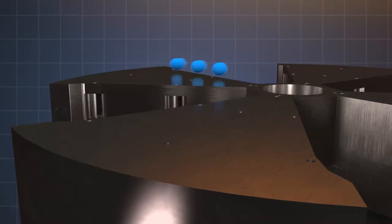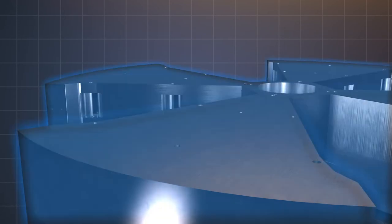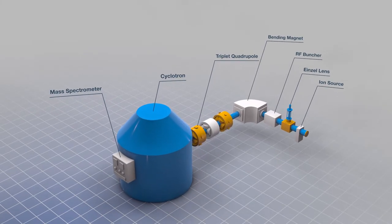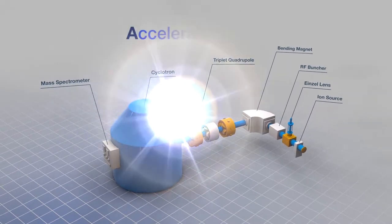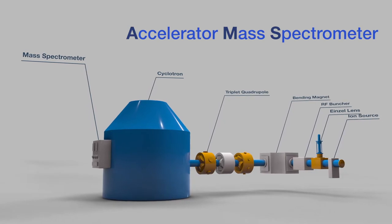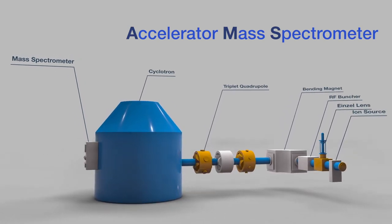What was developed by reversing these characteristics is a cyclotron accelerated spectrometer AMS for separation of carbon-14 used for radioisotope dating.